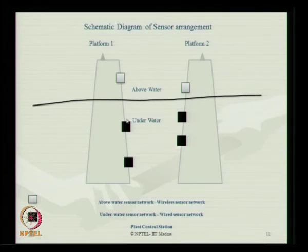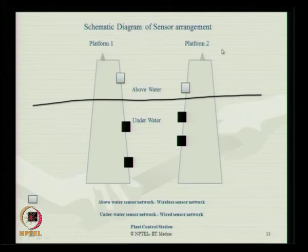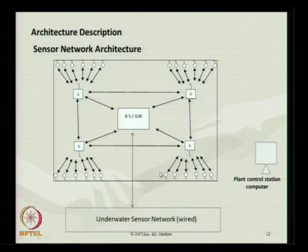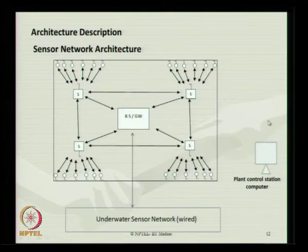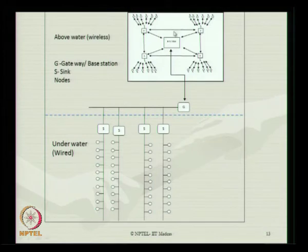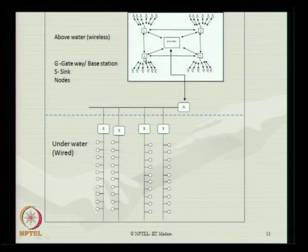The sensor network architecture has an underwater sensor network generally done with wires, and above-water sensors generally done with wireless sensor networking. All must be connected using RF communication to the plant control station, which is a localized computer control for a specific plant. Above-water sensors are essentially wireless and underwater sensors essentially wired. Both are connected via a gateway or base station, with different sinks locally connecting all the nodes to the sink, from which data is communicated to the gateway.